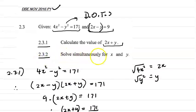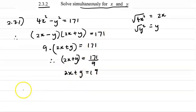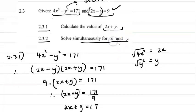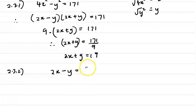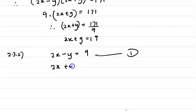2.3.2. Now, we can solve simultaneously for x and for y. Remember, 2x + y is equal to 19. So 2.3.2. But 2x - y, as given in the question, is equal to 9. So 2x - y is equal to 9. So let's call that equation 1. And let's call this 2x + y equal to 19 equation 2.